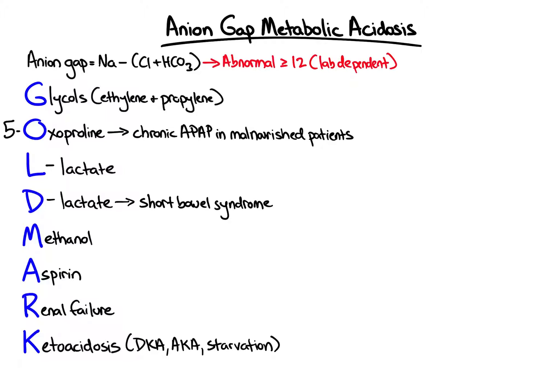How do we use the GOLDMARK mnemonic to work up an undifferentiated anion-gap metabolic acidosis? We can check for the presence of glycols by testing for toxic alcohols in the blood. While we cannot check for 5-oxoproline directly, we can check an acetaminophen level in the right clinical context — for example, patients reporting consistent acetaminophen usage. In cases of anion-gap metabolic acidosis due to 5-oxoproline accumulation, the acetaminophen level will often be in the therapeutic range or low. To check for L-lactate, the significantly more common isomer, we can check a lactate level.